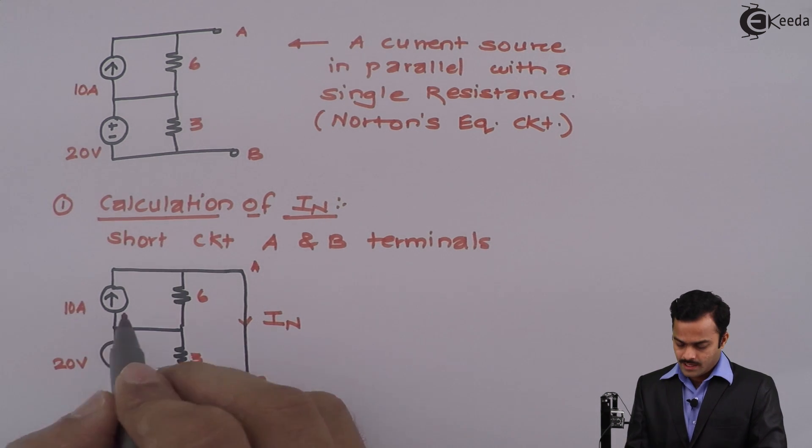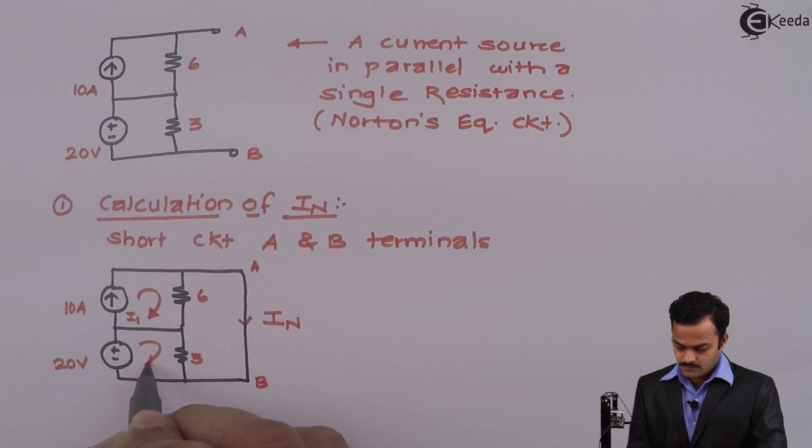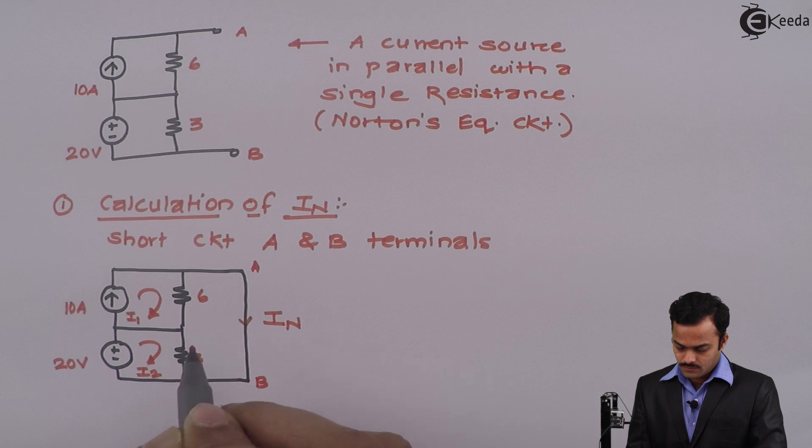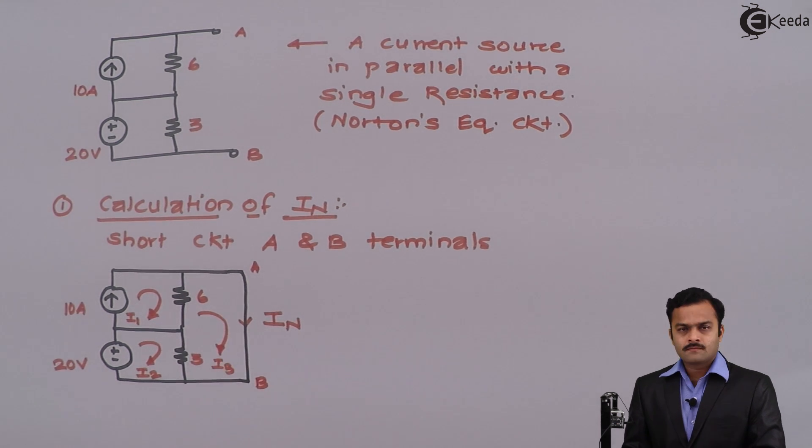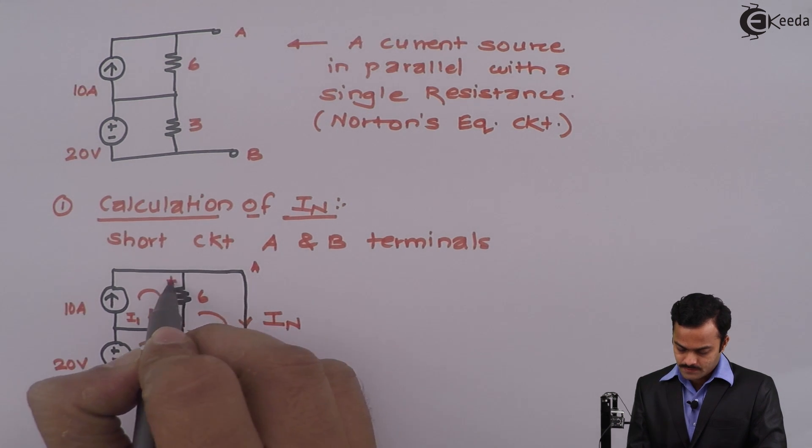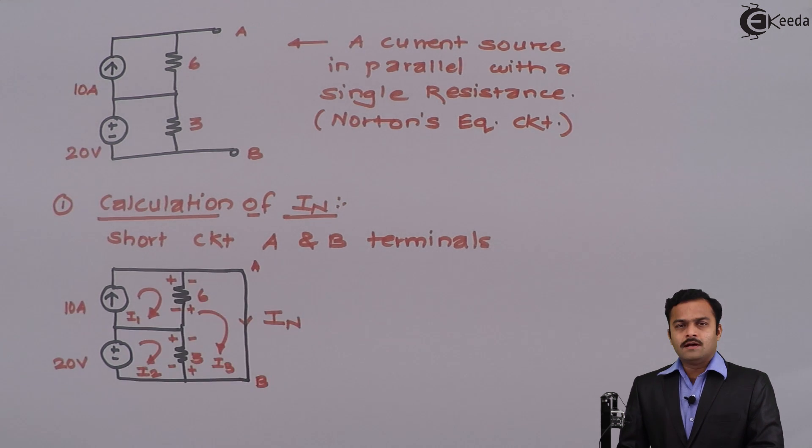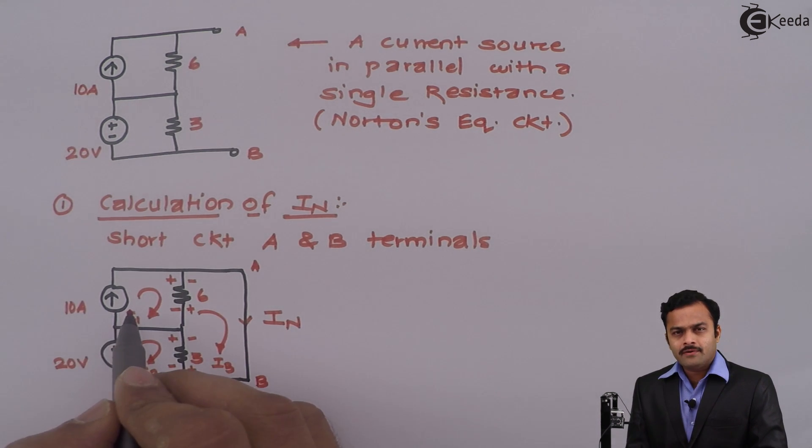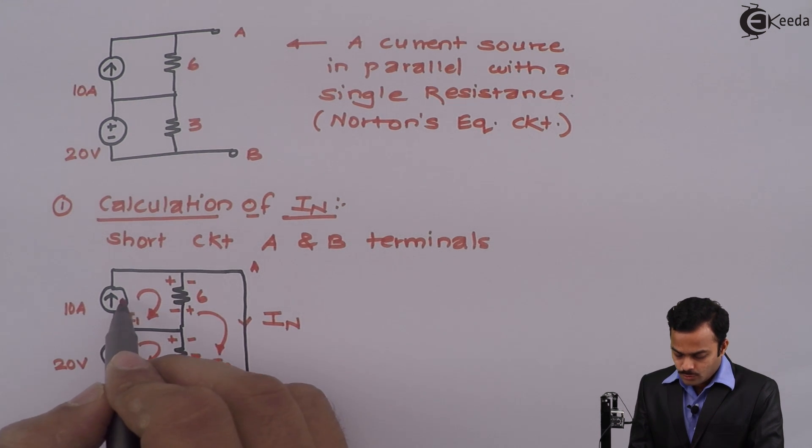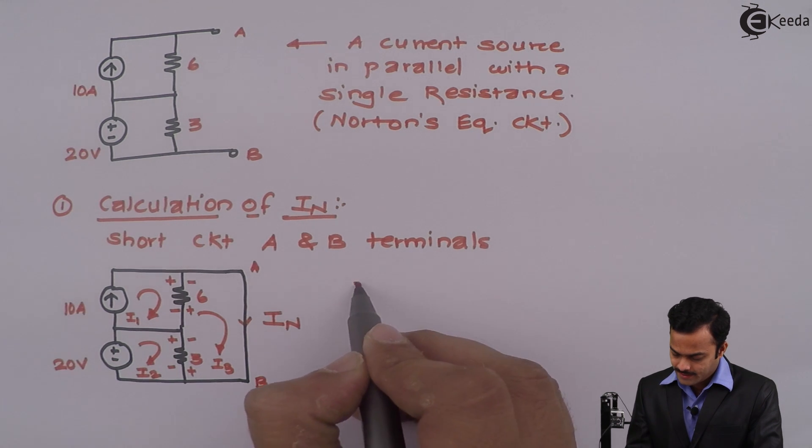I have three loops. I can get three loop currents I1, I2, and I3 as per the current directions. I will have voltage drops and now I am applying KVL to individual loops. No need to apply KVL to loop number one.